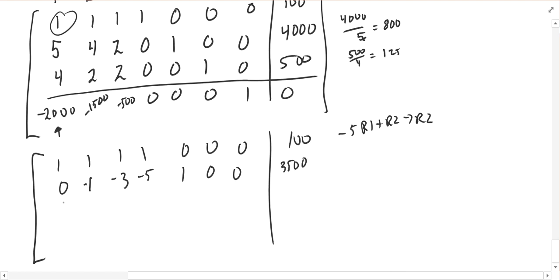Negative 4 times 1 plus 4 is 0. Negative 4 plus 2 is a negative 2. Negative 4 plus 2 is another negative 2. Negative 4 plus 0 is a negative 4. 0 plus 0 is 0. 0 plus 1 is 1. 0 plus 0 is 0. Negative 4 times 100 is negative 400, plus that 500 makes 100. And so that was negative 4 times row 1 plus row 3, put it into row 3's spot.